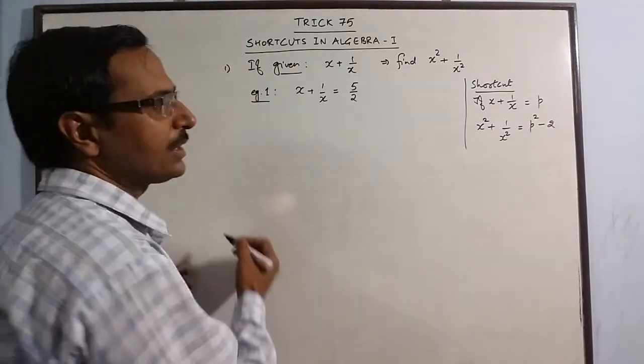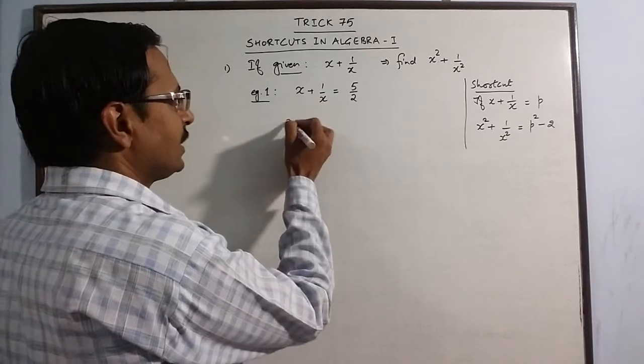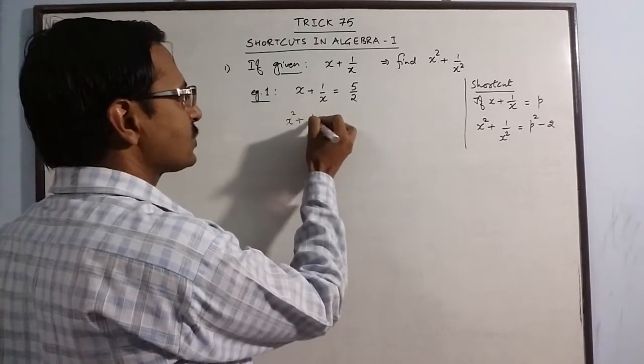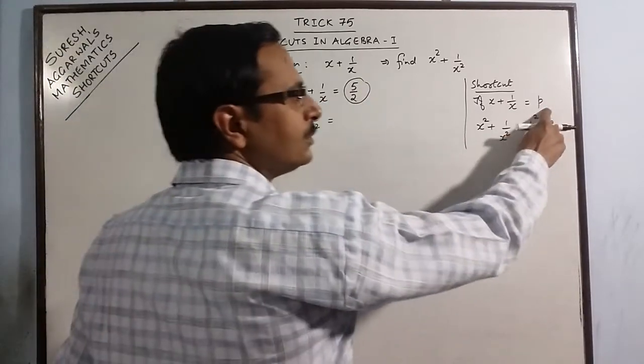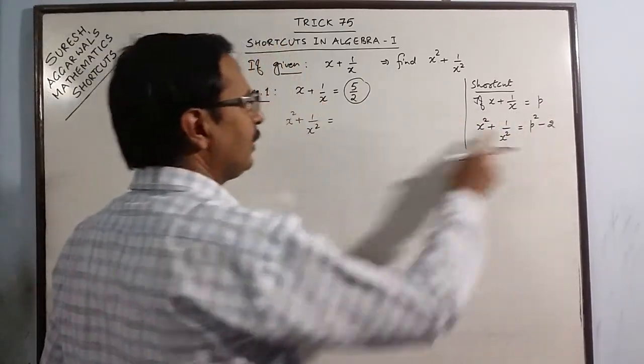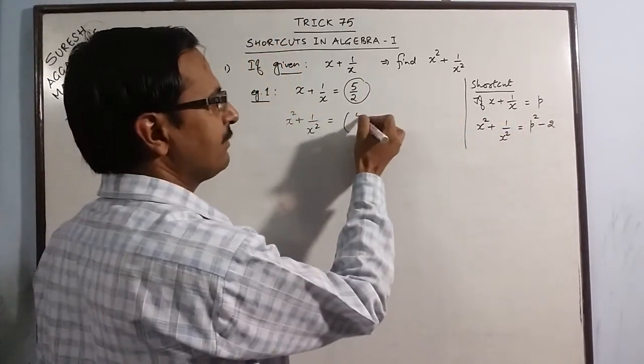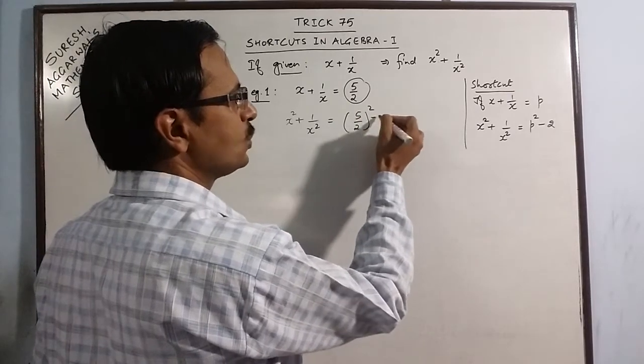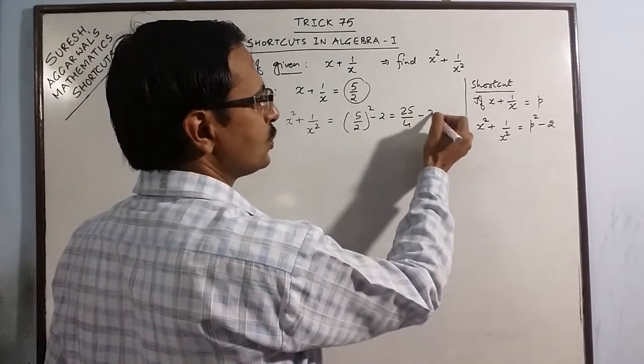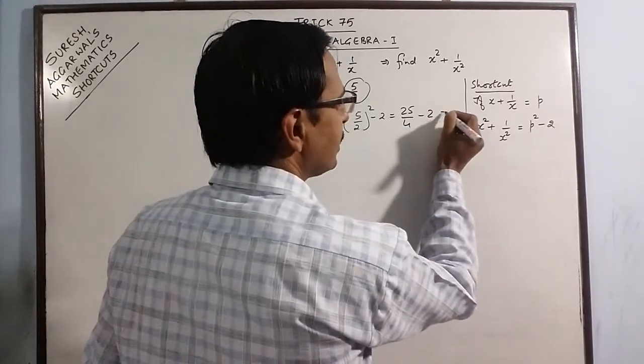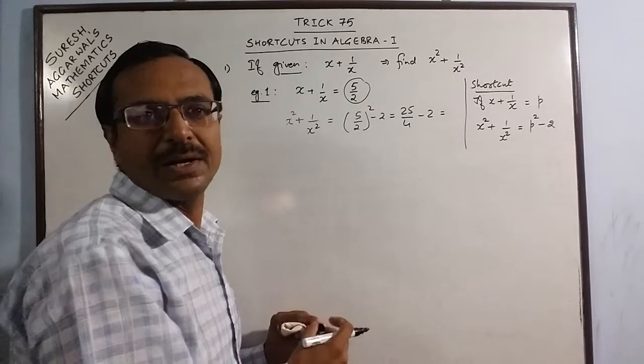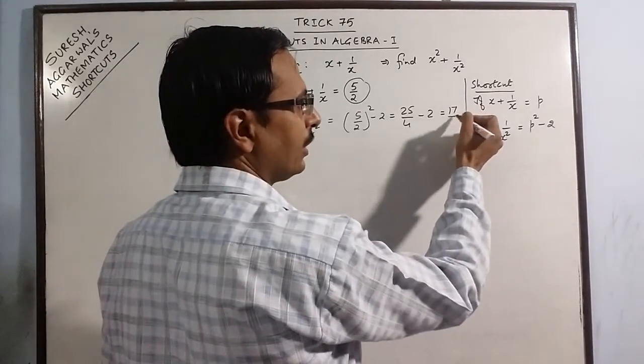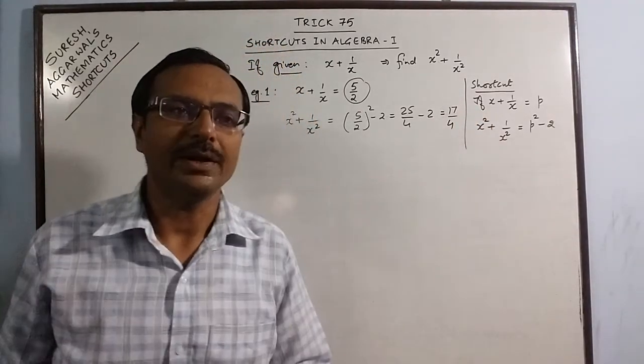Now see how simple things become. You have x squared plus 1 by x squared. Here the value of p is 5 upon 2. So the value of x squared plus 1 over x squared is 5 upon 2 whole square minus 2 which is 25 upon 4 minus 2. This is 25 minus 8, which is 17 upon 4. This is the required answer.